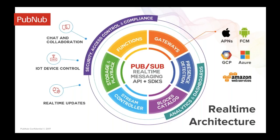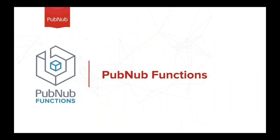Oz is going to go a little bit more into detail about Functions in just a second. PubNub can support all types of real-time use cases, but we see the majority of successful customer deployments in three core areas: chat and collaboration, IoT device control, and real-time updates. Now I'm going to give the mic over to Oz, who can give you a bit more information about PubNub Functions and Vault.